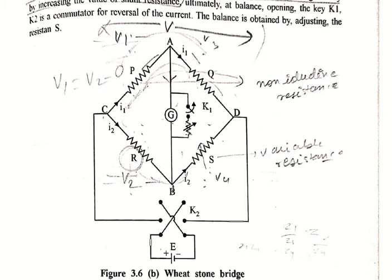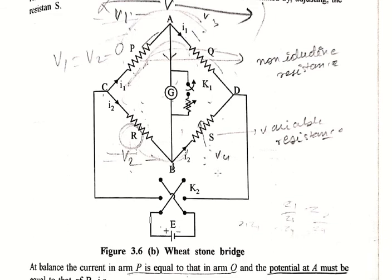The sensitivity can be increased gradually by increasing the value of the shunt resistance. The bridge balance is ultimately obtained by opening the key K1. K2 is a commutator for reversal of the current. The balance is obtained by varying resistance S.